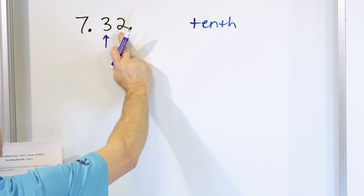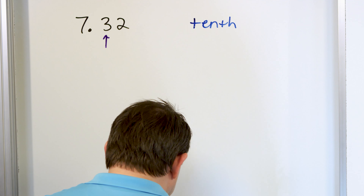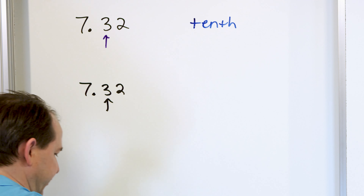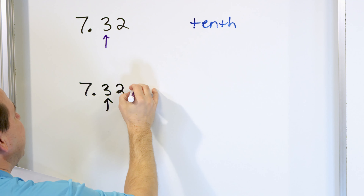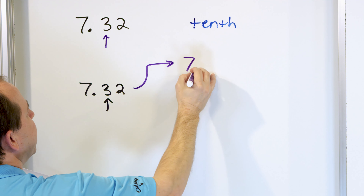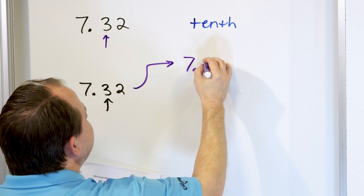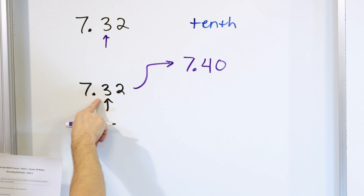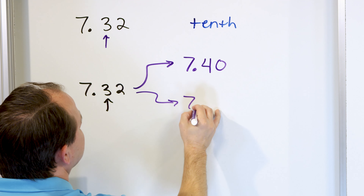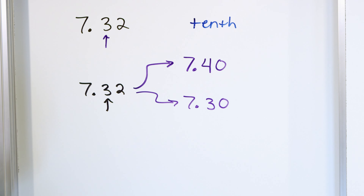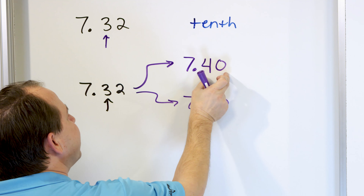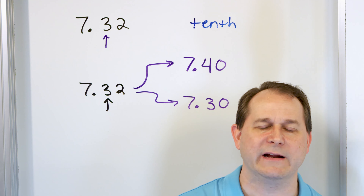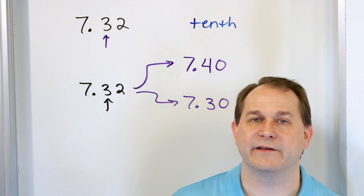In order to figure out what to do, we go to the tiebreaker. Let's rewrite the number: seven point three two. We're rounding to the tenths position, so we're either going to round up to seven point four zero or round down to seven point three zero. I put the zeros in to keep the same number of digits, but remember that with decimals, a trailing zero beyond the decimal point has no impact on the value of the number.